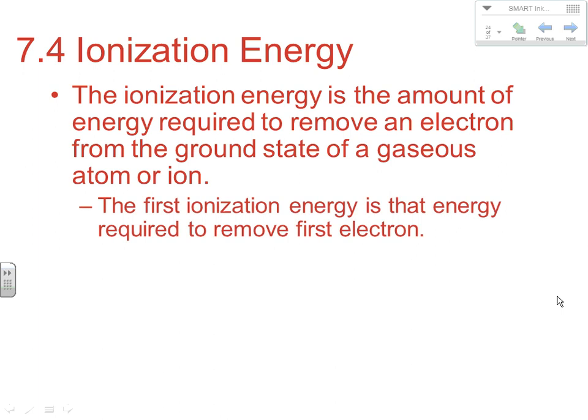One thing we do differently with ionization energy is we look at multiple ionization energies and compare them. So it's a new kind of trend — rather than a cross-down trend, it's looking at how the first compares to the second and so on. The first ionization energy is the energy to remove the first electron. For something like elemental sodium in its gaseous state, since we're removing an electron, an electron is going to be one of our products.